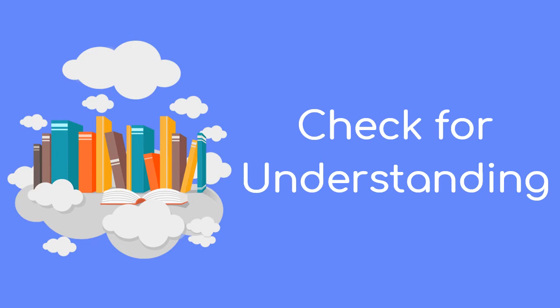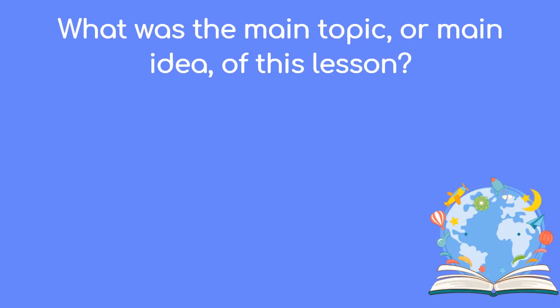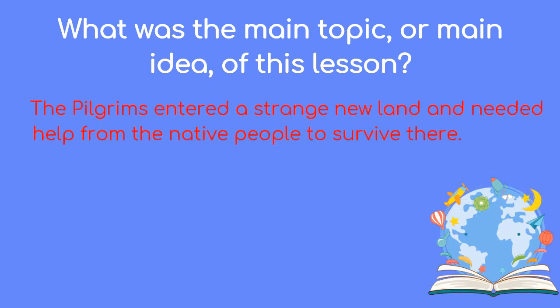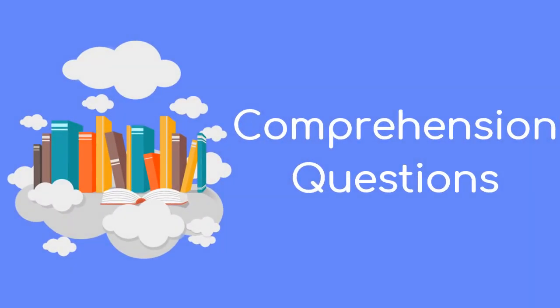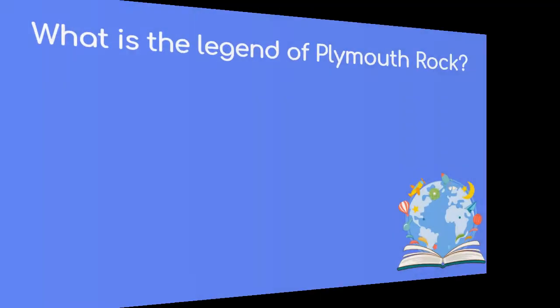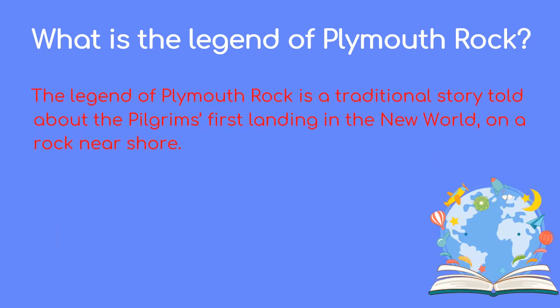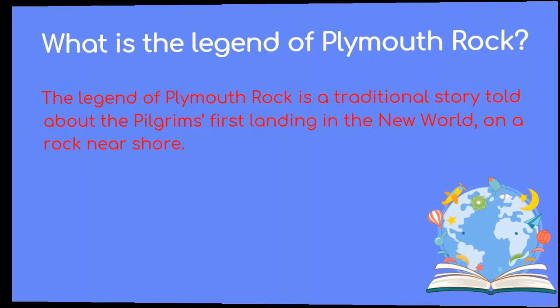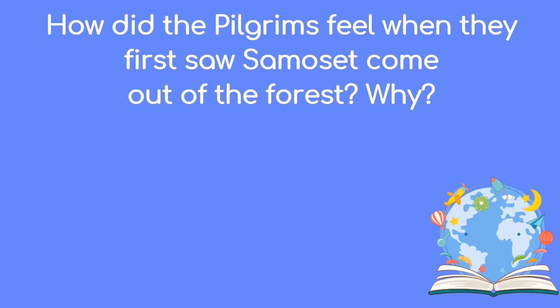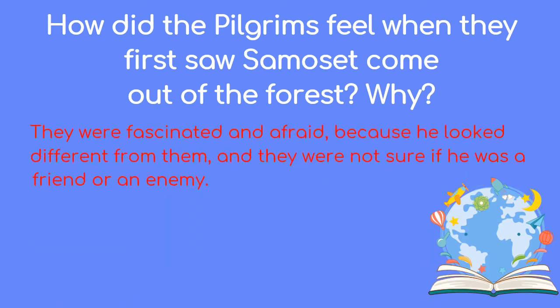Now answer these questions about today's story. What was the main topic or main idea of this lesson? The pilgrims entered a strange new land and needed help from the native people to survive there. What is the Legend of Plymouth Rock? The Legend of Plymouth Rock is a traditional story told about the pilgrims' first landing in the New World on a rock near shore. How did the pilgrims feel when they first saw Samoset come out of the forest, and why? They were fascinated and afraid because he looked different from them and they were not sure if he was a friend or an enemy.